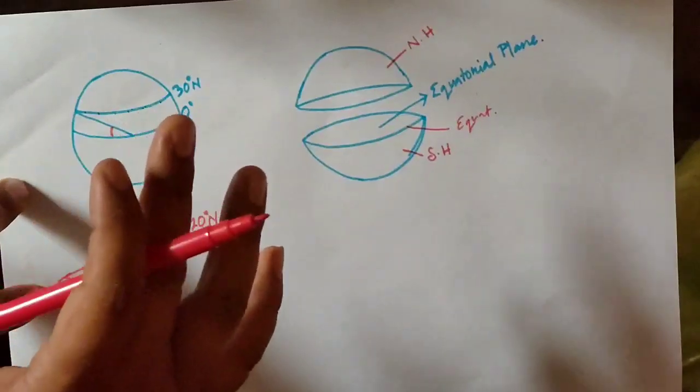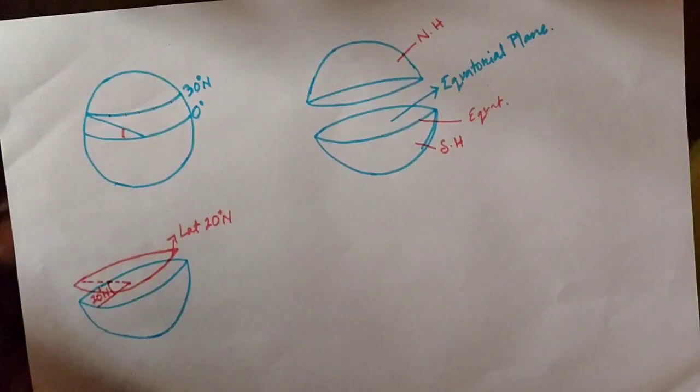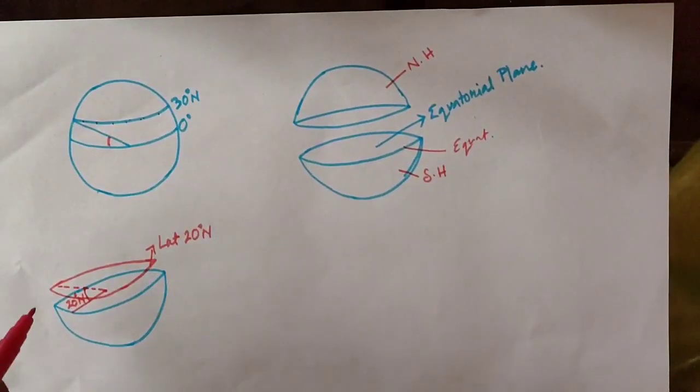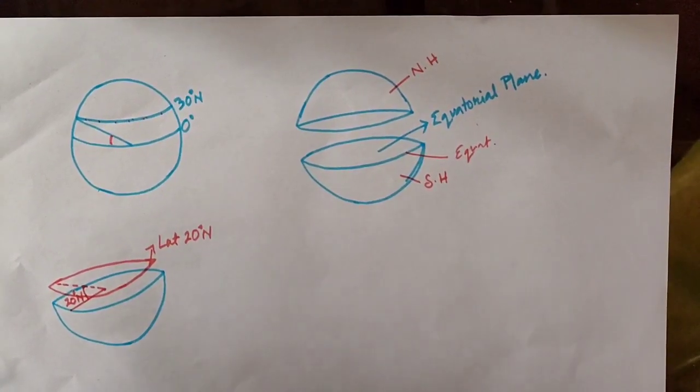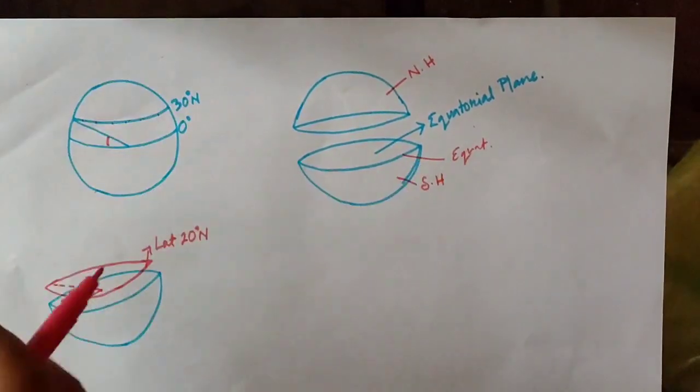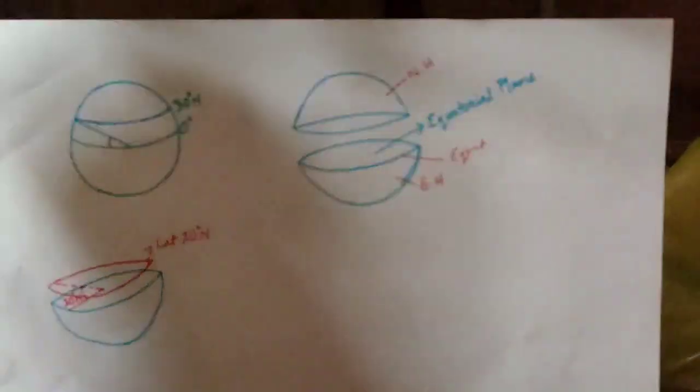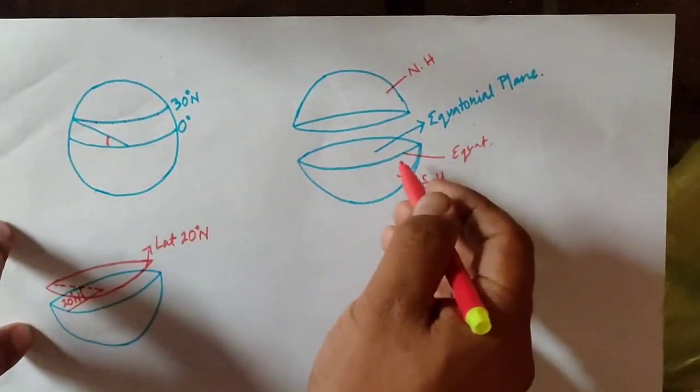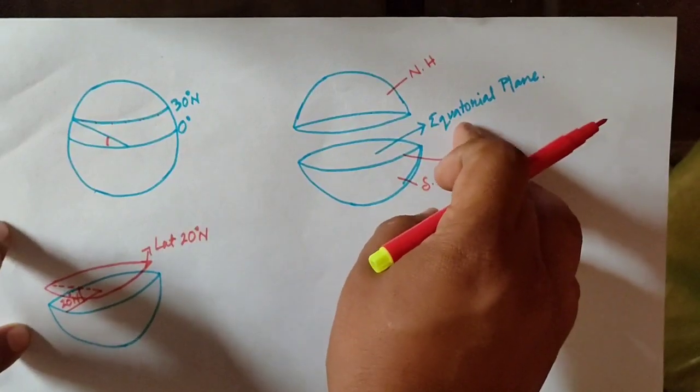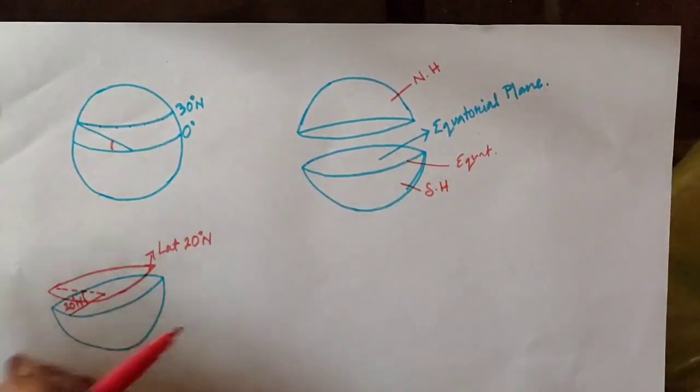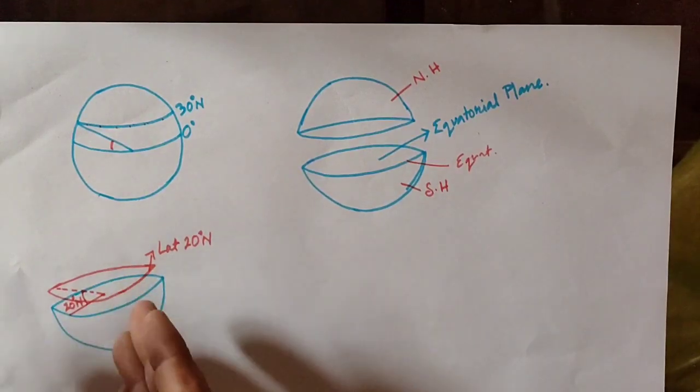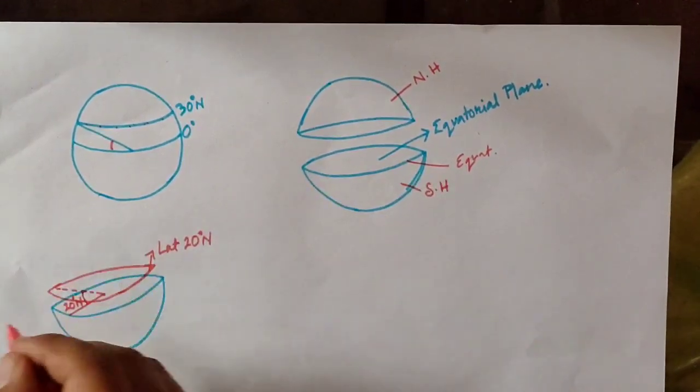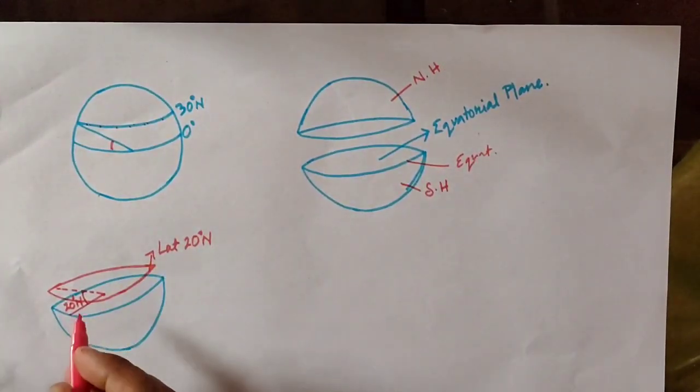To have a better concept of latitude, let's examine the diagrams. In the second diagram, I have divided the earth into two halves - the northern half and the southern half. The flat surface bounded by the southern hemisphere in the center is the equatorial plane. In the third diagram, there is a horizontal line and an inclined line making an angle of 20 degrees to the globe surface.